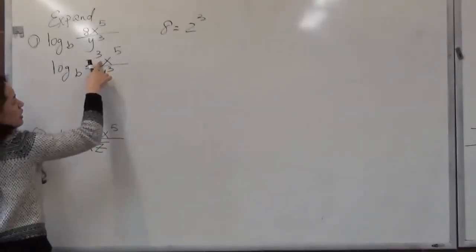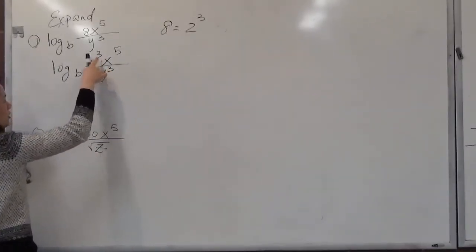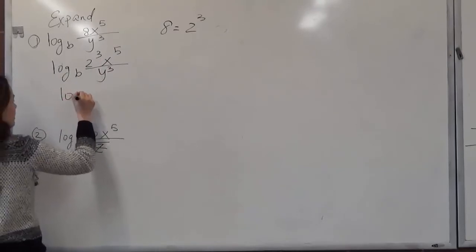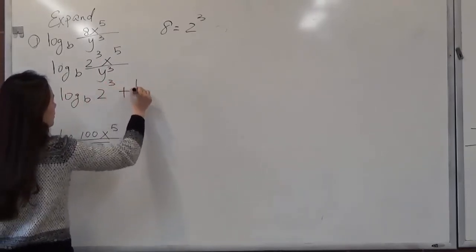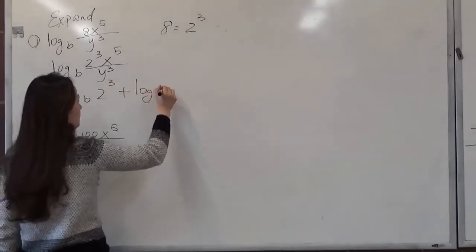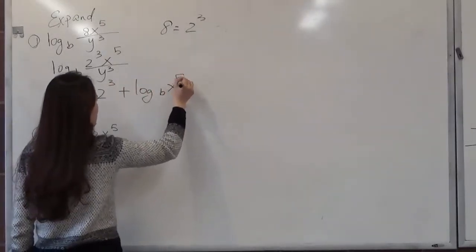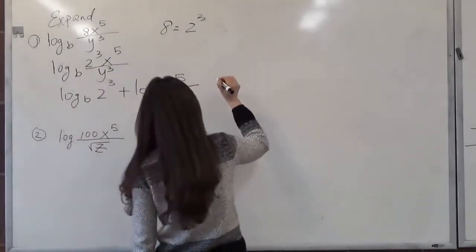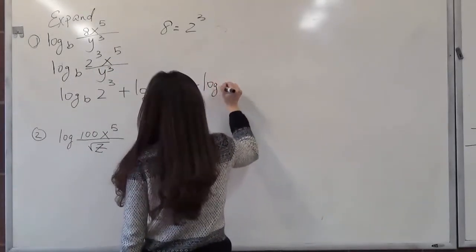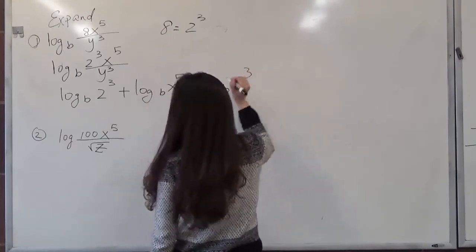Let's start with the numerator. We know this is a multiplication. So you have to write log b, 2 to the 3 power plus log b, x to the fifth power. And that quotient tells you you have to do subtraction, take away log b, y to the 3 power.